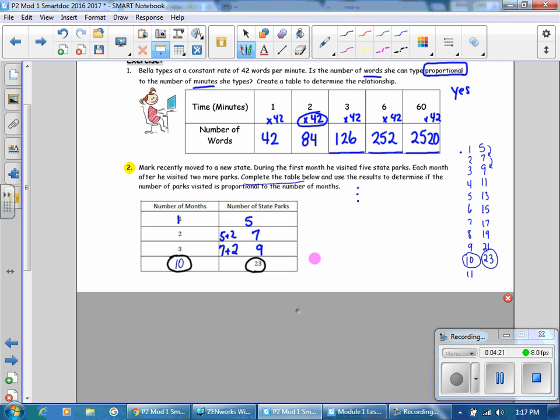So we completed the table. Now use the results to determine if the number of parks visited is proportional to the number of months. We know it's proportional if there is a multiplier that is going to be the same for all of these numbers. So the multiplier for the first pair, one times five equals five, two times three and a half equals seven, three times three equals nine. Now I don't need to go any farther because I can already see that the multiplier is not the same. And since the multiplier is different, the answer is no, this is not a proportional relationship.